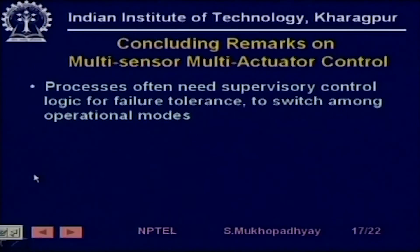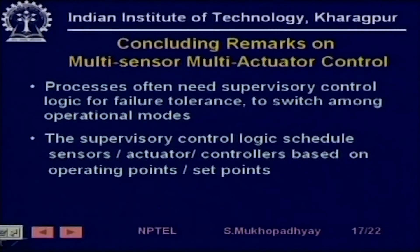We have come to the end of the lecture. Some concluding remarks on multi-sensor multi-actuator control: industrial processes often need supervisory control logic. Apart from the basic control logic in either the hot water valve or cold water valve, there will be an automatic controller. Above that you need logic based on process variables to determine which sensor will be active, which actuator will be active, and which controller will be active. This is called supervisory control logic, and it is needed for process operations. It is achieved through these control loops, which switch among operational modes and schedule sensors and actuators.